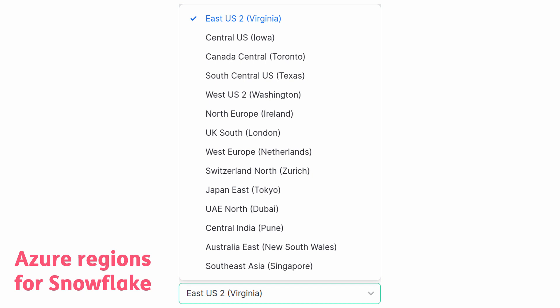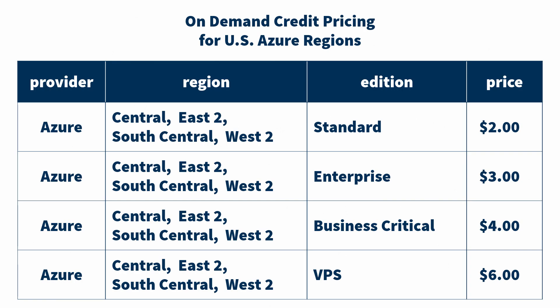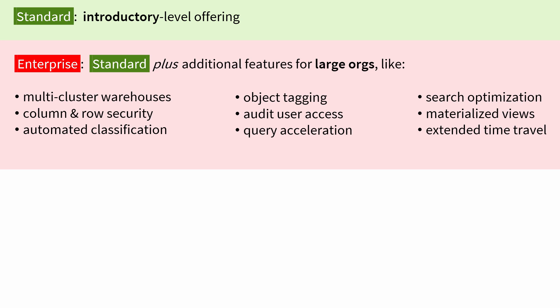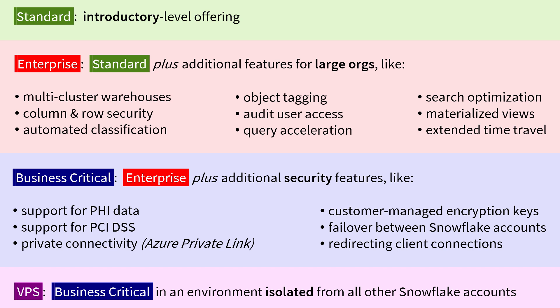Looking at just Azure, when you set up your Snowflake account, you can select from many regions. I mapped the non-government U.S. regions to make them easier to see. Snowflake prices do not vary within these four U.S. regions, so you don't need to select a region based on price. You do, however, need to decide which edition to use. The Standard Edition is the base package, great for startups and students. Enterprise adds several features useful for large organizations. Business Critical adds several security features, and Virtual Private Snowflake is the Business Critical Edition running in its own environment, isolated from all other Snowflake customers.